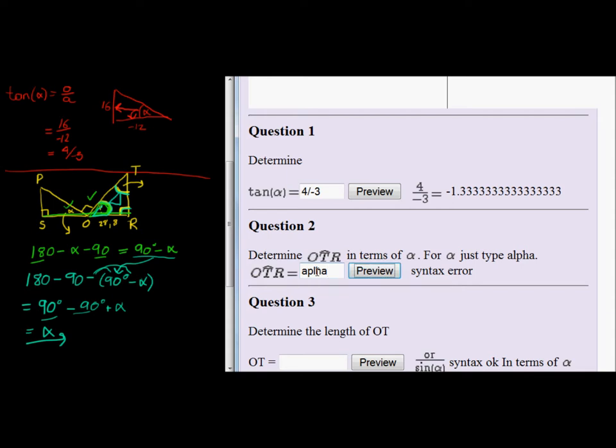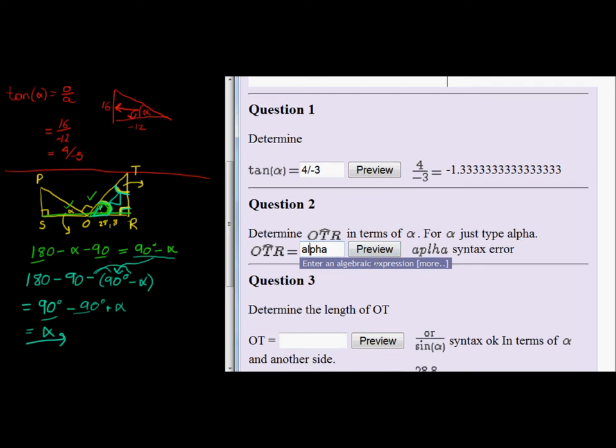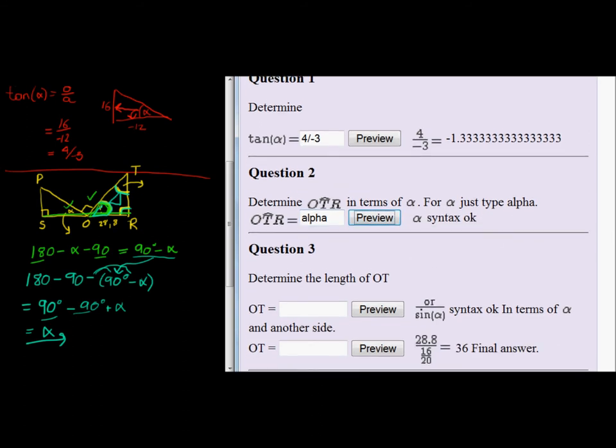Just type it in like that. Preview. Oh, I spelled it wrong. So it helps to preview. There we go. Alpha. That's great.